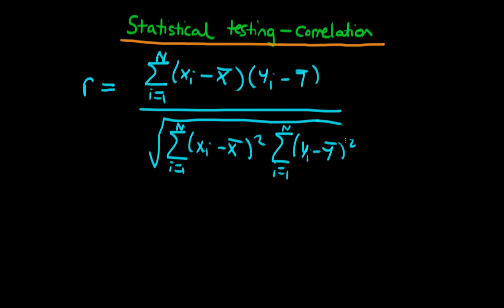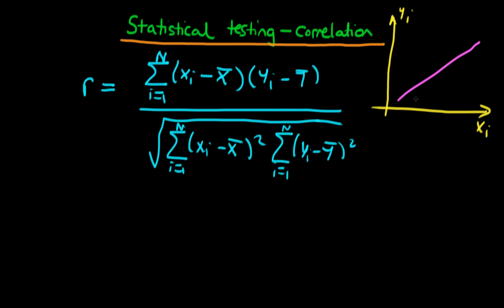Let's talk a little bit about what the intuition is behind this particular expression. The idea is that if we have our data sets x and y, and they are positively correlated with one another — so if we were to fit a line it would have a positive slope through our data — and if we imagine there being a sample average of x, which we call x-bar, and a sample average of y, which we call y-bar, then we can think about what this expression is actually going to output.